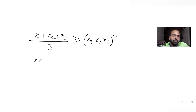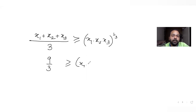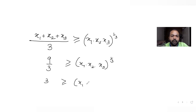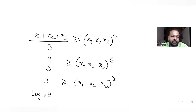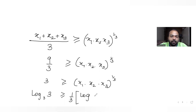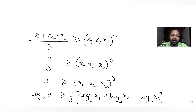The sum x1 + x2 + x3 is directly known, so substituting that value divided by 3 gives us (x1 · x2 · x3)^(1/3) ≤ some value, which gives x1 · x2 · x3 ≤ 3 (after cubing). Now taking log base 3 on both sides: the 1/3 power comes to the front, and log of the product becomes log x1 base 3 + log x2 base 3 + log x3 base 3.